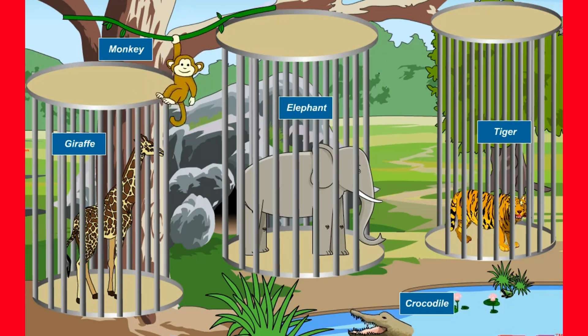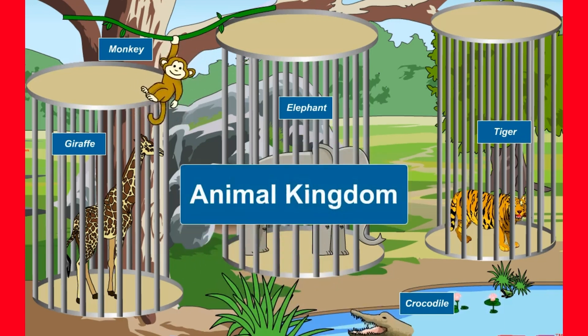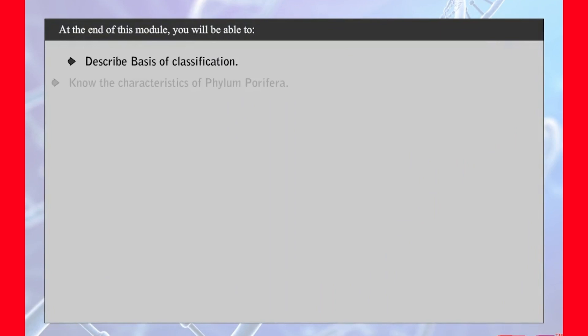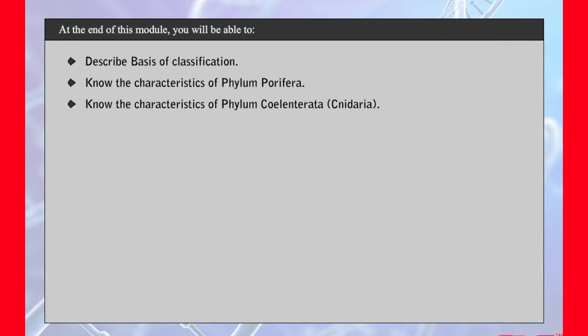In this module we will learn about the animal kingdom. At the end of this module you will be able to describe the basis of classification, know the characteristics of phylum Porifera, and know the characteristics of phylum Coelenterata.